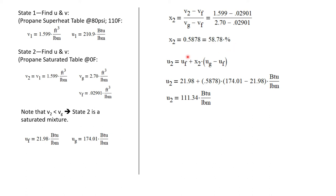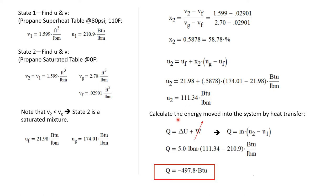Knowing the quality, now I can calculate the internal energy. U sub two is just U sub F plus the quality times U sub G minus U sub F. Again, I'll plug in these values. And I get U sub two is 111.34 BTUs per pound mass.